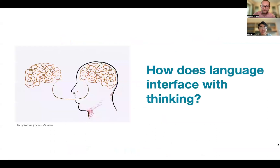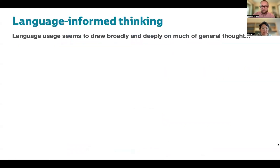So the question that's framing this talk is: how does language relate to the rest of cognition? That is, how does language interface with thought? Because we can talk about seemingly so much of what we can think about, and language in turn seems to inform so much of our downstream thinking. We can call this phenomenon language-informed thinking.